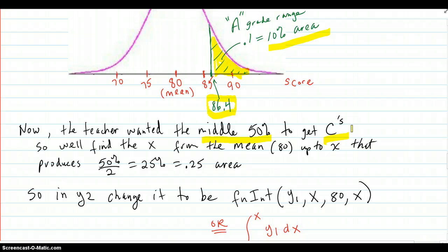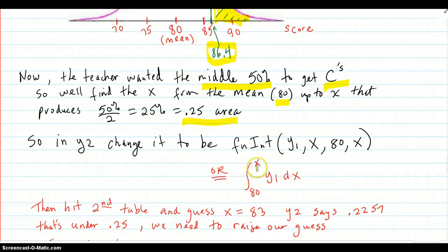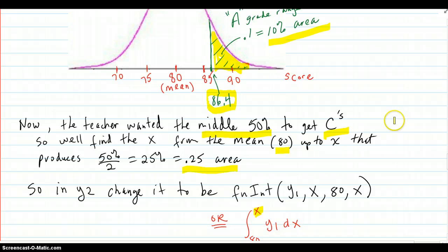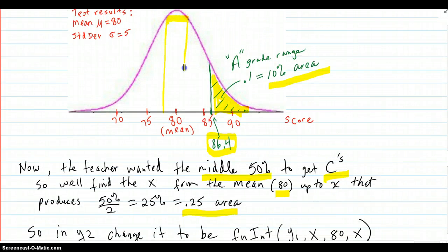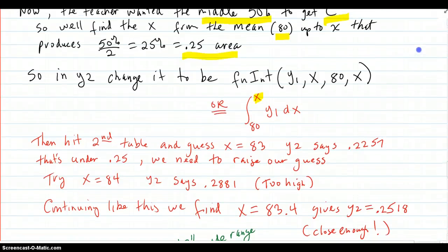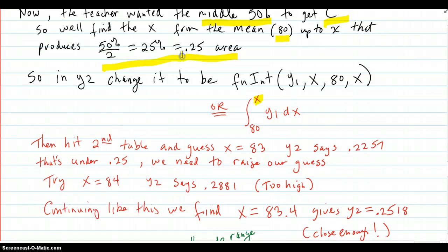Now, the teacher wanted the middle 50% to get C's. So, we'll find the x from the mean, which is 80, up to x that gives and produces 25% of the area. In other words, we want to do this. From 80 up to this x, we want that area to be 25%. Because we also want 25% below 80. So, we want somewhere in here, we want this area up there to be 50%. So, we need 25% on one side and 25% on the other. So, we're just doing one half of this and making it be 25%. So, which is stated right here.